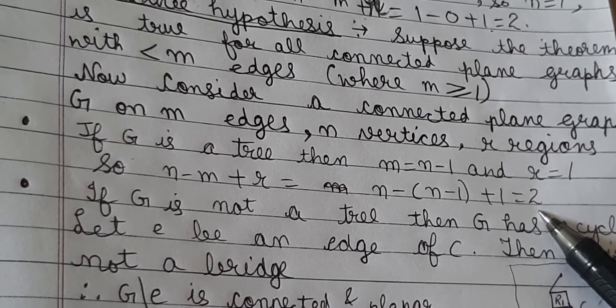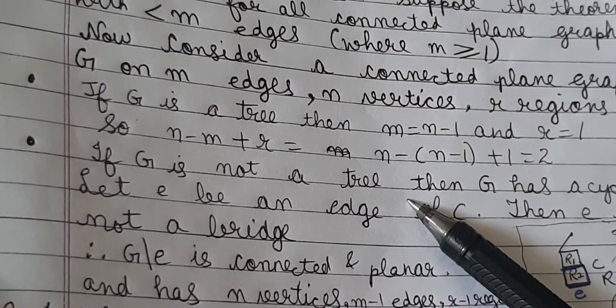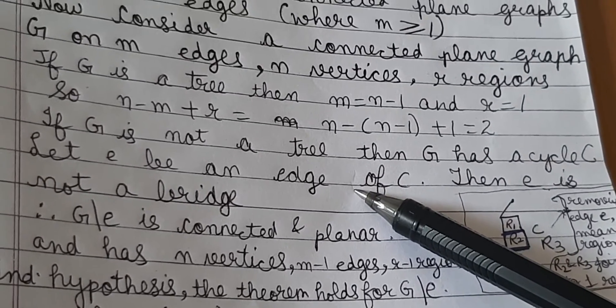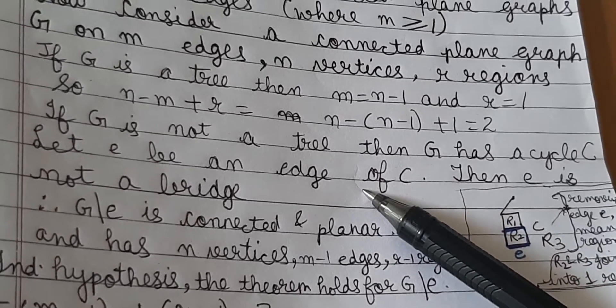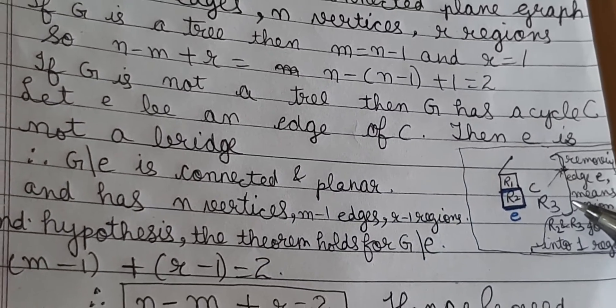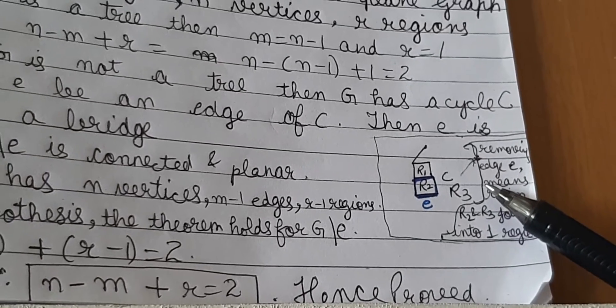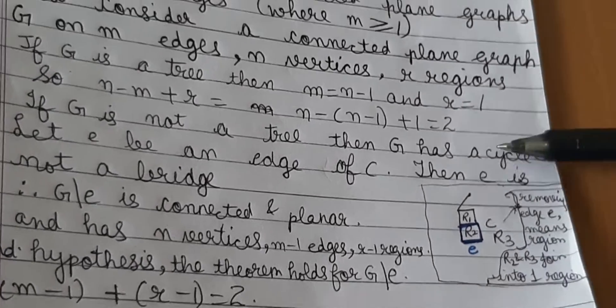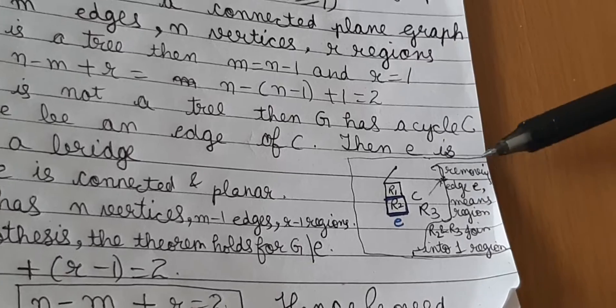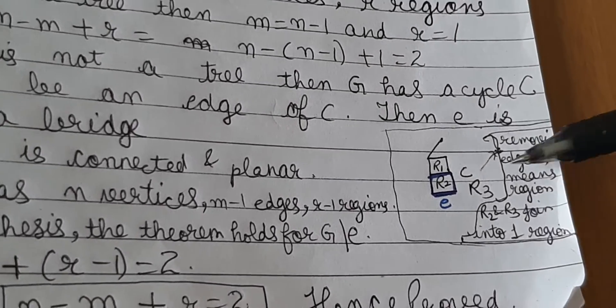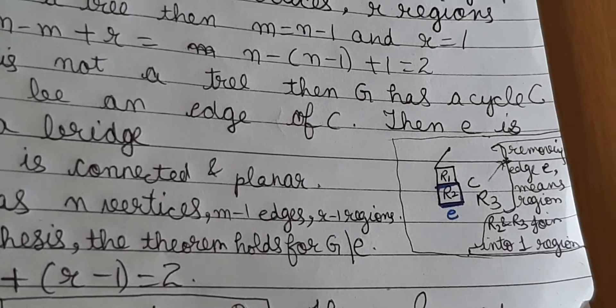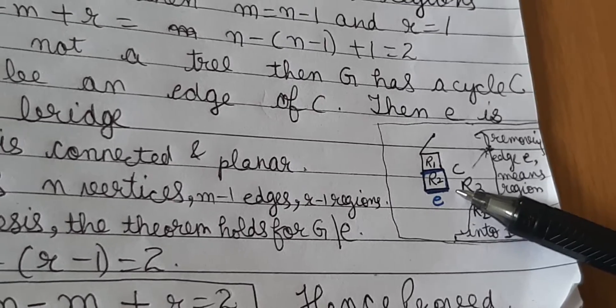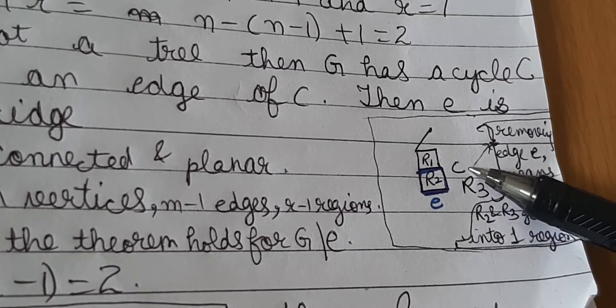Next we look at the case where G is not a tree. We already know that if G is a connected graph, it is still planar as well and it has n vertices, m minus 1 edges and r minus 1 regions. Let's take a look at a very small example. Here if we have a plane graph which has a few cycles in it.